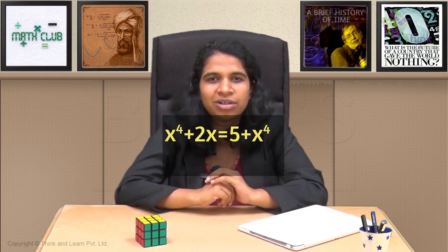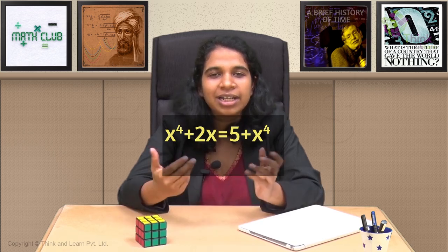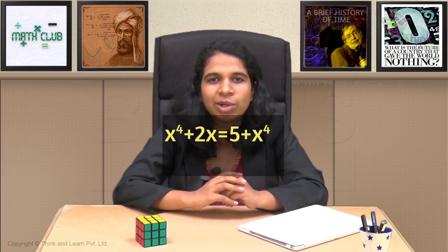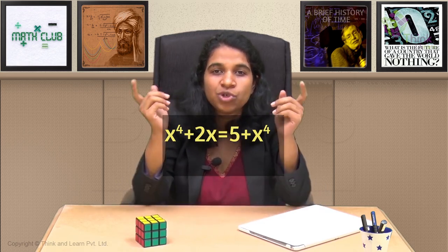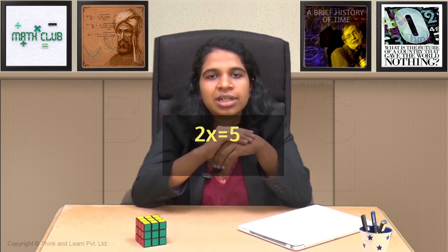Can't be possible, right? We started with a linear equation. I made the degree 4. You might make the degree 3. Somebody else will make the degree 5. Cannot work that way, right? The reason is, if you simplify this, x raised to 4 on both sides. It's going to get cancelled. You'll again be left with just 2x equal to 5, which is a linear equation.